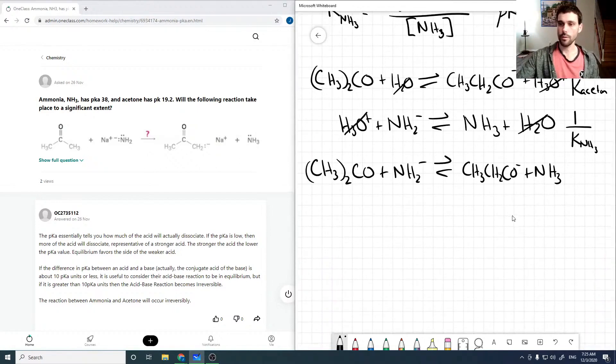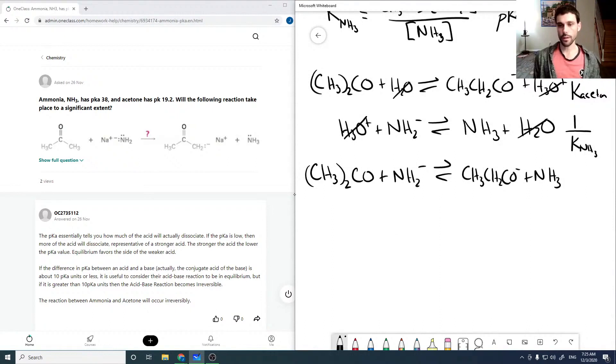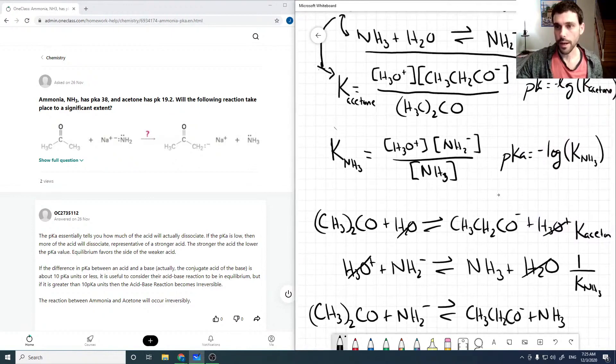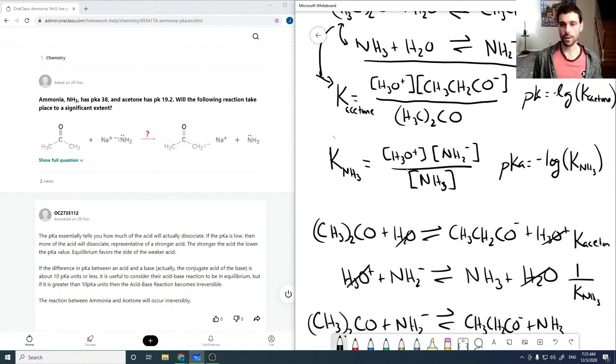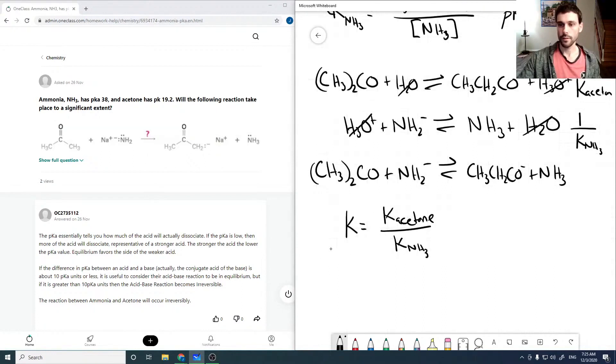And so if we look now, or if you recall, summing a reaction, the K will be just the product. So it will just be K_acetone over K_NH3. We could also verify that by taking these two expressions here and directly multiplying acetone by 1 over, and you see that your H3O pluses will cancel and you'll end up with NH3 upstairs and NH2 minus on the denominator, which is exactly what we would expect here. So it should be products over reactants.